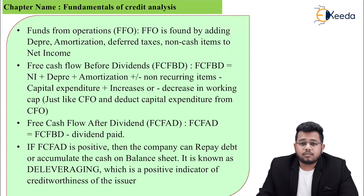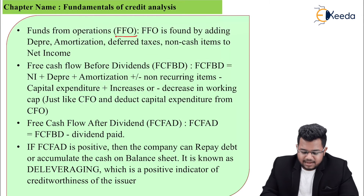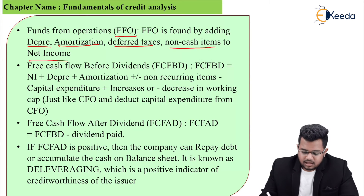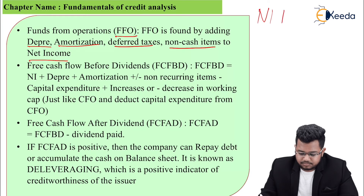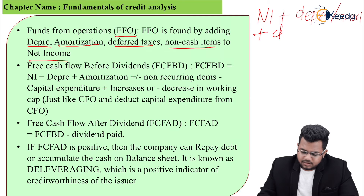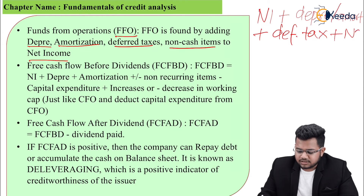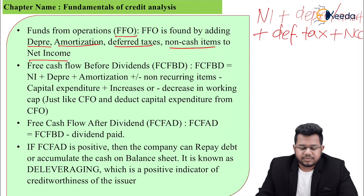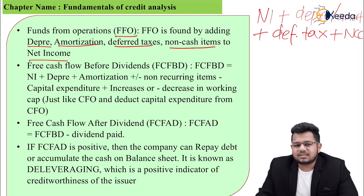FFO, funds from operations, is found by adding depreciation, amortization, deferred taxes, and non-cash items to net income. The formula is: net income plus depreciation and amortization, plus deferred taxes and any other non-cash charges. This looks very similar to cash from operations, CFO.